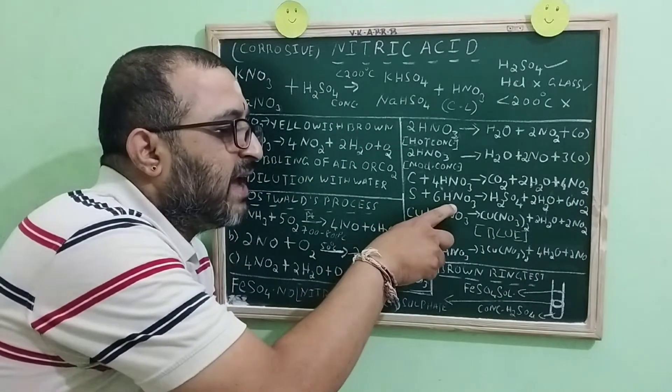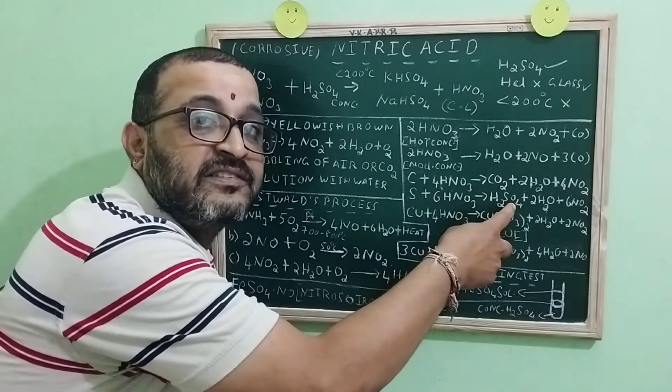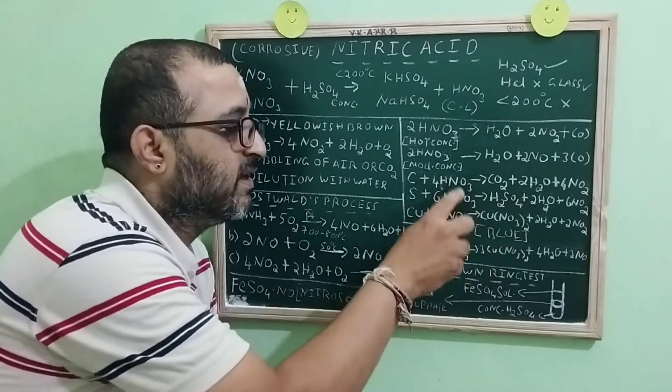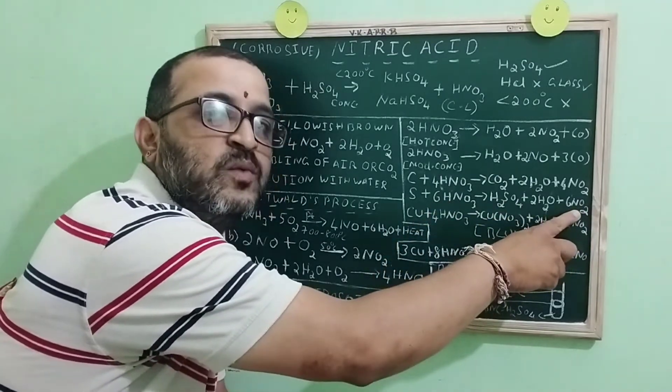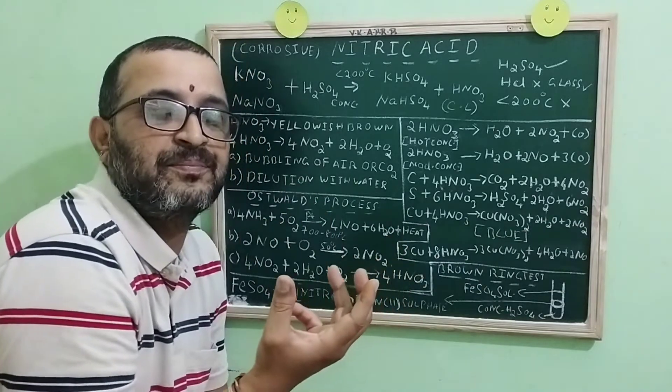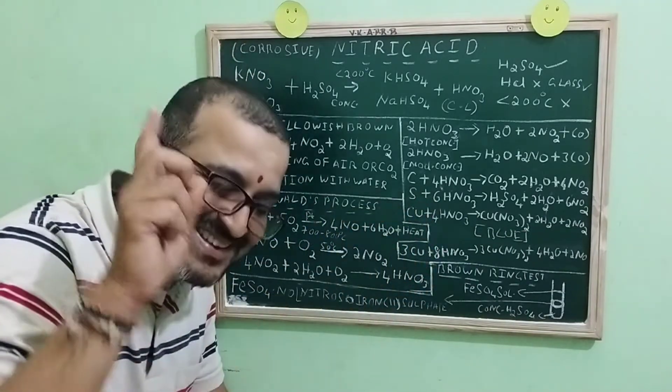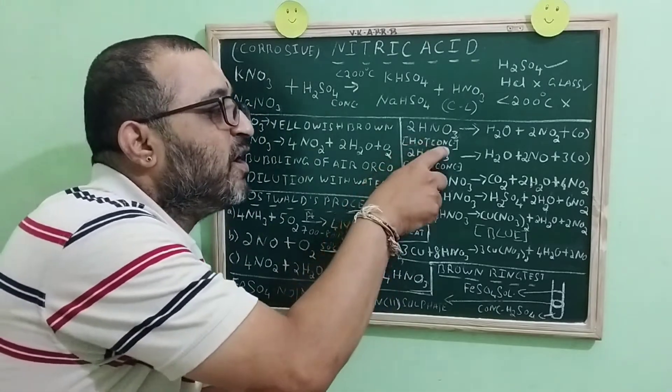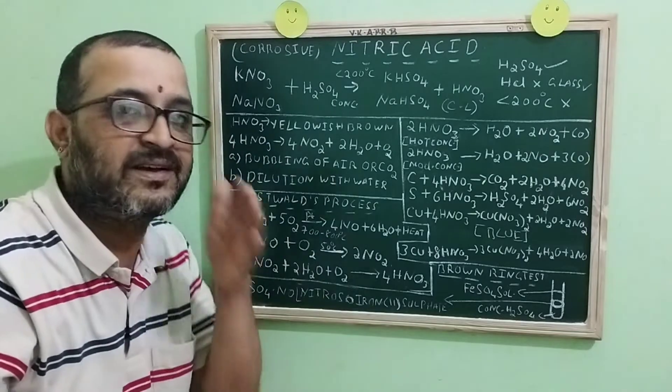Sulfur with nitric acid gets oxidized to sulfuric acid. So sulfuric acid is the oxidized product. Then nitric acid gets reduced to NO2. So NO2 is the reduced product. Here also, the type of nitric acid used is hot concentrated or hot dilute nitric acid.